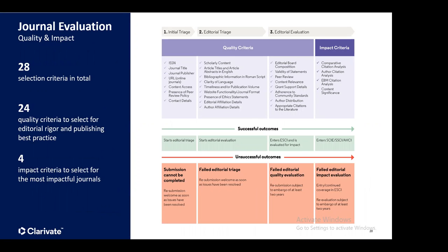In total we have 28 selection criteria: 24 quality criteria and 4 impact criteria based on citation analysis. All quality standards need to be met, as well as all impact criteria, to be entered into the Web of Science primary collection — which includes the Social Science Citation Index, the Science Citation Index, and the Arts and Humanities Citation Index. Once a publication meets the quality criteria it is included in the Web of Science Core Collection as part of the Emerging Sources Citation Index, and only when it meets the impact criteria does it enter into the three primary indexes.